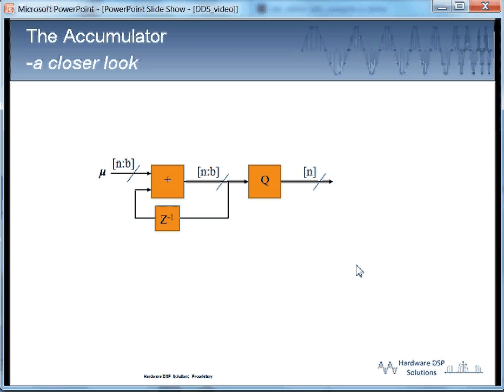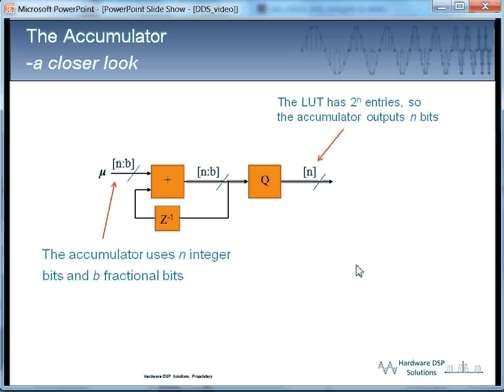So the way we stride through this table is with the accumulator. And we see here a basic block diagram of an accumulator. Note that the value mu is defined as having n integer bits and b fractional bits. But the fractional bits get quantized away. So what is the value of those fractional bits? They get quantized away because we can't address a lookup table with fractional values. It has to be an integer value. Increasing b provides greater frequency precision.